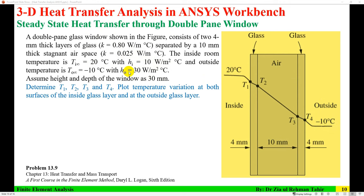Inside room temperature is 20°C and the convective heat transfer coefficient for the inside is 10 W/m²·°C. Outside temperature is -10°C and the convective heat transfer coefficient for outside is 30 W/m·°C. Although it looks like a 2D problem, I am going to solve it as 3D.